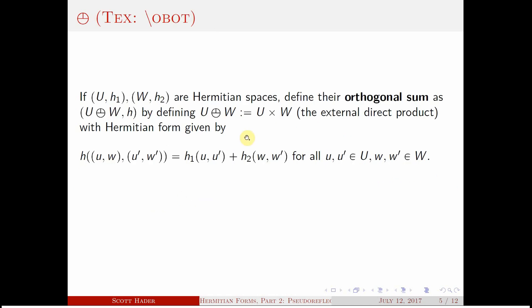Now we can introduce a new symbol called, in LaTeX, obot. If you have two Hermitian spaces, we can define their orthogonal sum — that's the obot symbol. It's like O-plus, but with the additional property that the Hermitian form is defined so that if you O-plus two Hermitian spaces together, the form works by adding their forms together with each component.